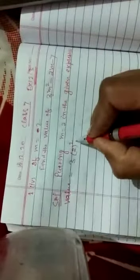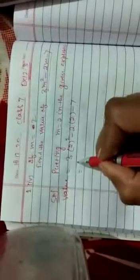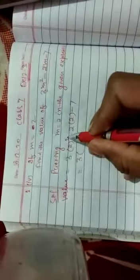Three, in place of m we have to put two, so it will be two square because it is m square. So we'll be putting two square minus two. Two m means two into m, so we'll be putting bracket two into two minus seven.